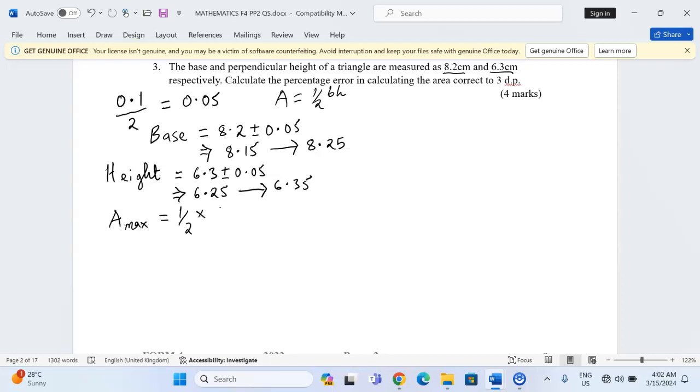the upper limit of the base, which is 8.25, multiplied by the upper limit of the height, 6.35. So now we're going to record this: 0.5 multiplied by 8.25 multiplied by 6.35. The maximum area is going to be 26.19375 square centimeters.